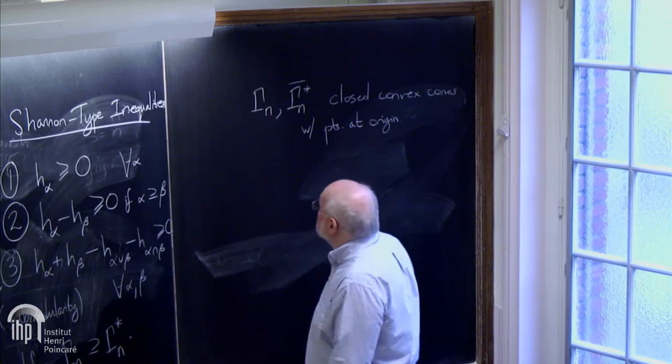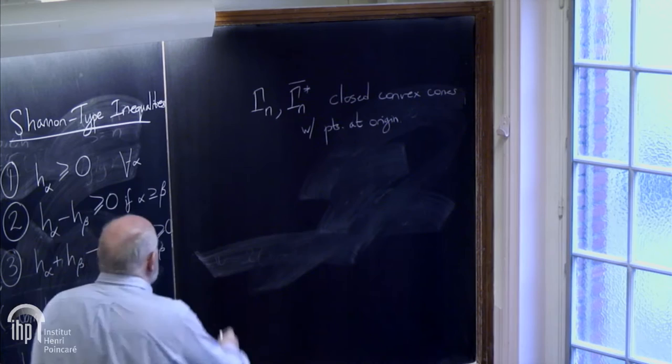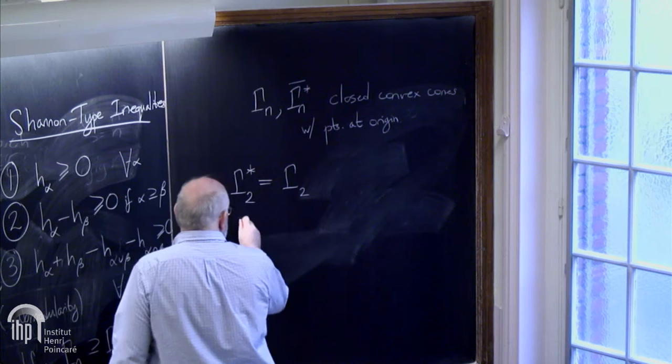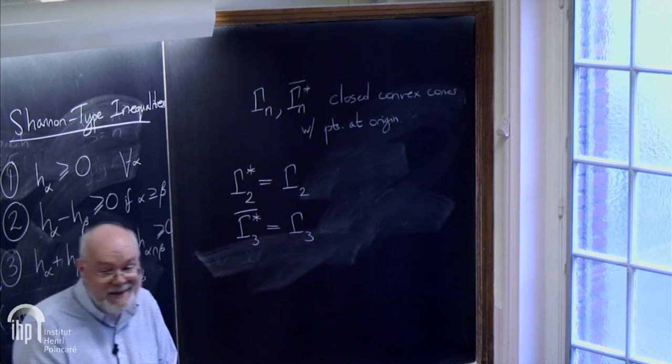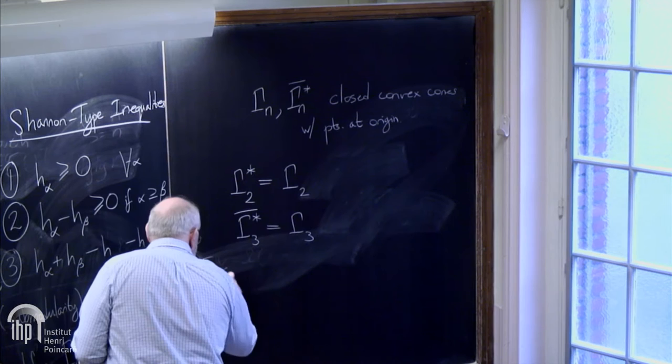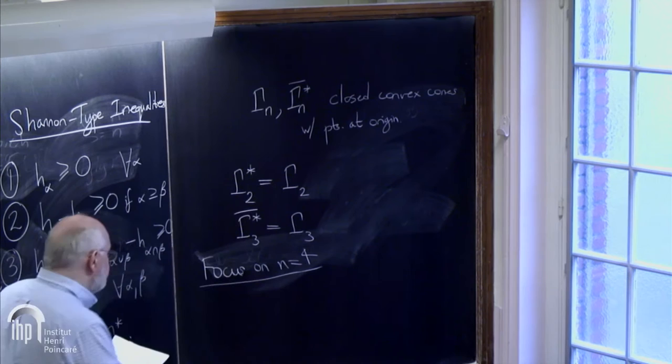Gamma n and gamma n star closure are closed convex cones with the points at the origin. We might hope for gamma n to equal gamma n star bar. In fact, gamma 2 star is gamma 2. Gamma 3 star isn't quite gamma 3, but its closure is. But then things start getting wacky for n equals 4.